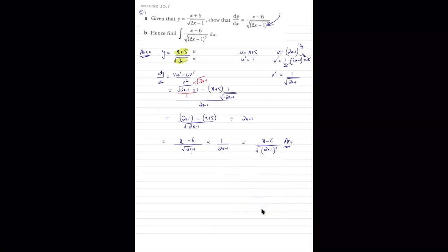The second part uses the command word 'hence', indicating the previous result should be used. Hence find ∫(x-6)/(2x-1)^(3/2) dx. Since differentiating (x+5)/√(2x-1) gave (x-6)/(2x-1)^(3/2), the integration is simply (x+5)/√(2x-1) + c.